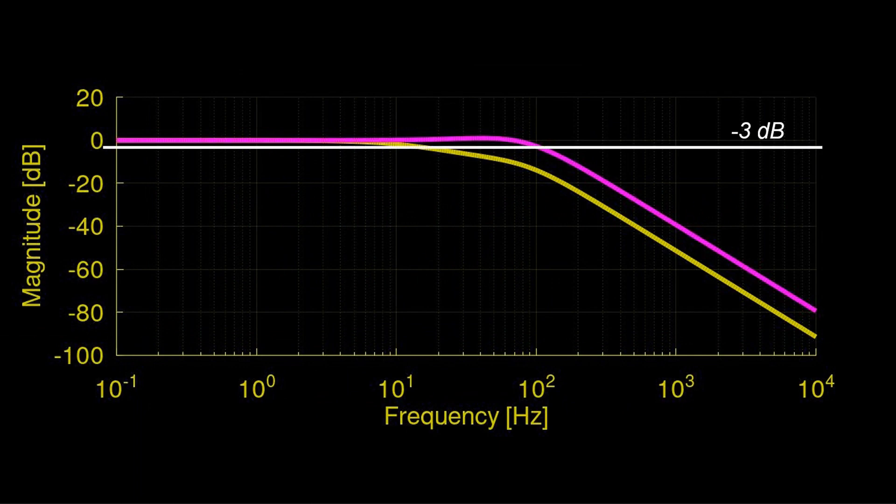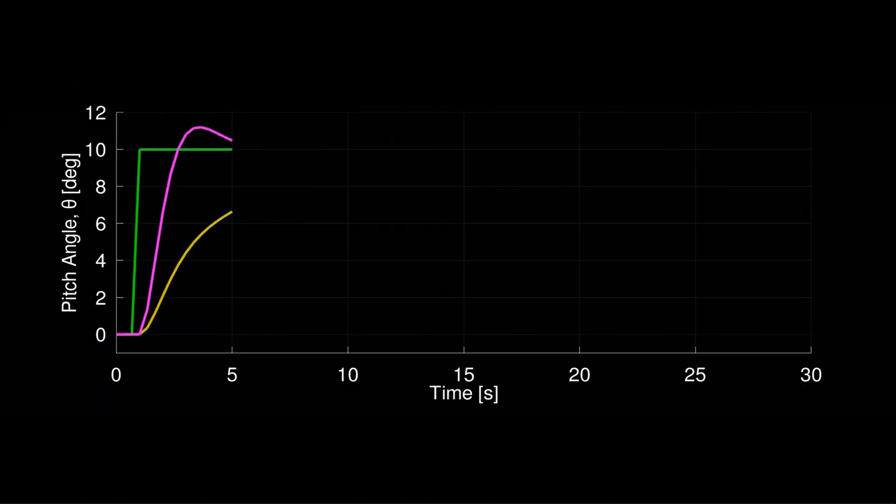The lead compensated closed loop system has greater bandwidth than the original, and a much faster rise time.